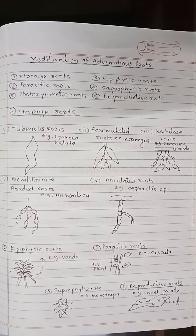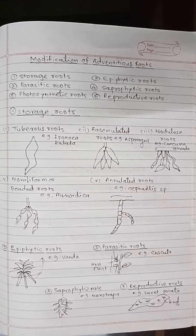The second type is fasciculated roots. These roots are tuberous roots arising in clusters from the base of the stem. These roots are found in Asparagus and Dahlia.